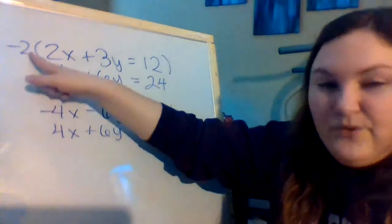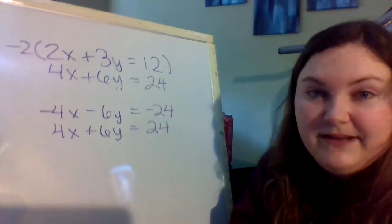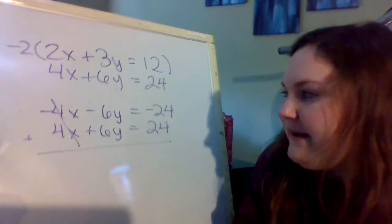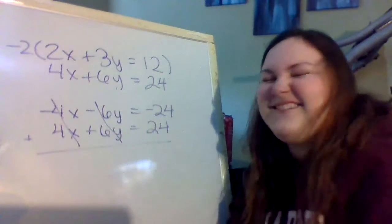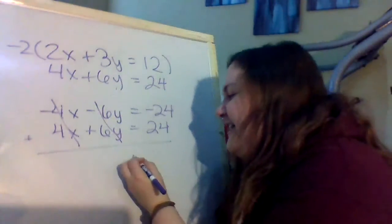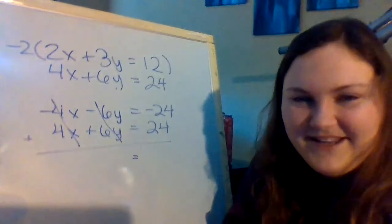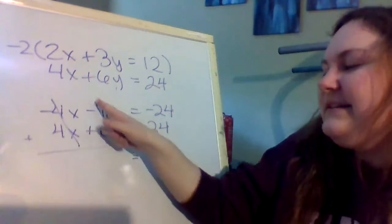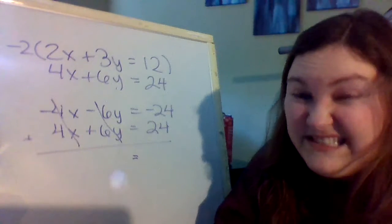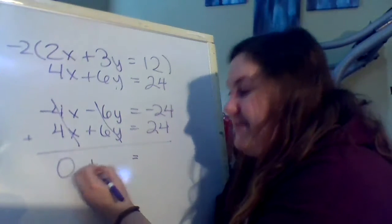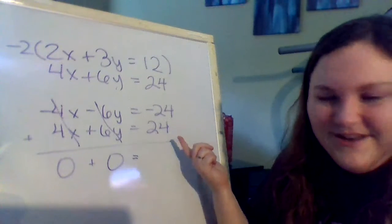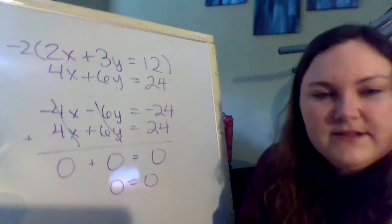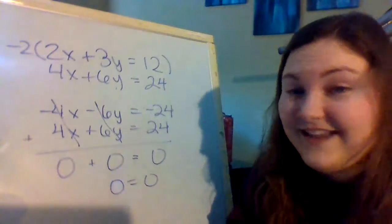Now we did that, we chose to multiply by negative 2 so that our x's could eliminate. And just like we wanted, when we go to combine, our x's are going to eliminate. But our y's are also going to eliminate. And then over here on this side, this is going to eliminate. Instead of using the word eliminate or cancel, let's think about what it actually equals. When we say these eliminate, they eliminate because they equal 0. So I'm getting a 0 here, I'm getting a 0 here, and then on this side negative 24 plus 24 equals 0. So I end up getting 0 plus 0 equals 0, or we can say 0 equals 0. Now that's weird, that's different than all the other problems.